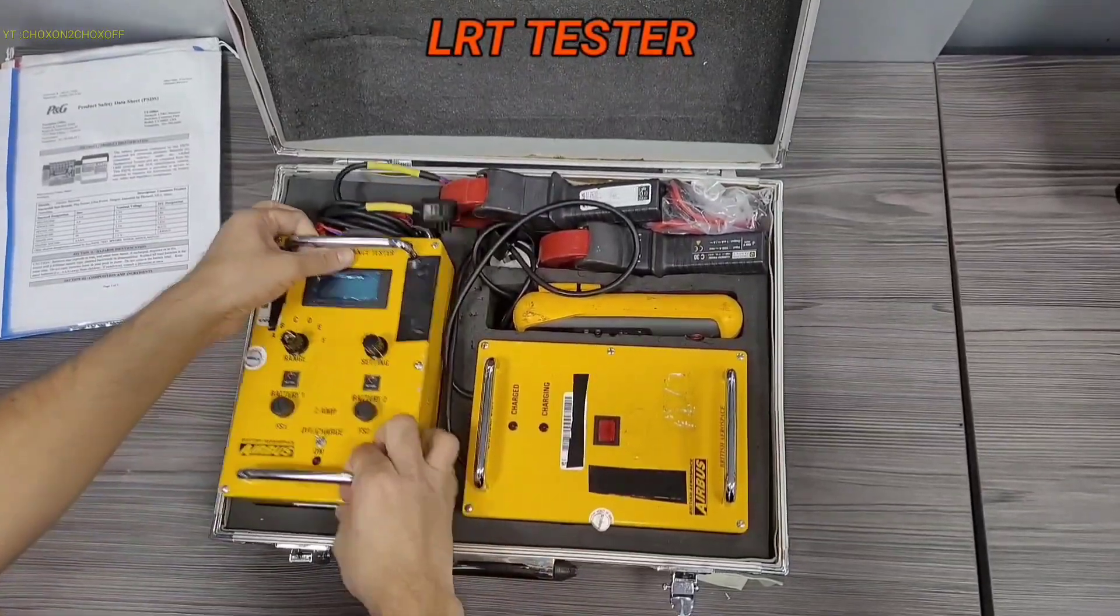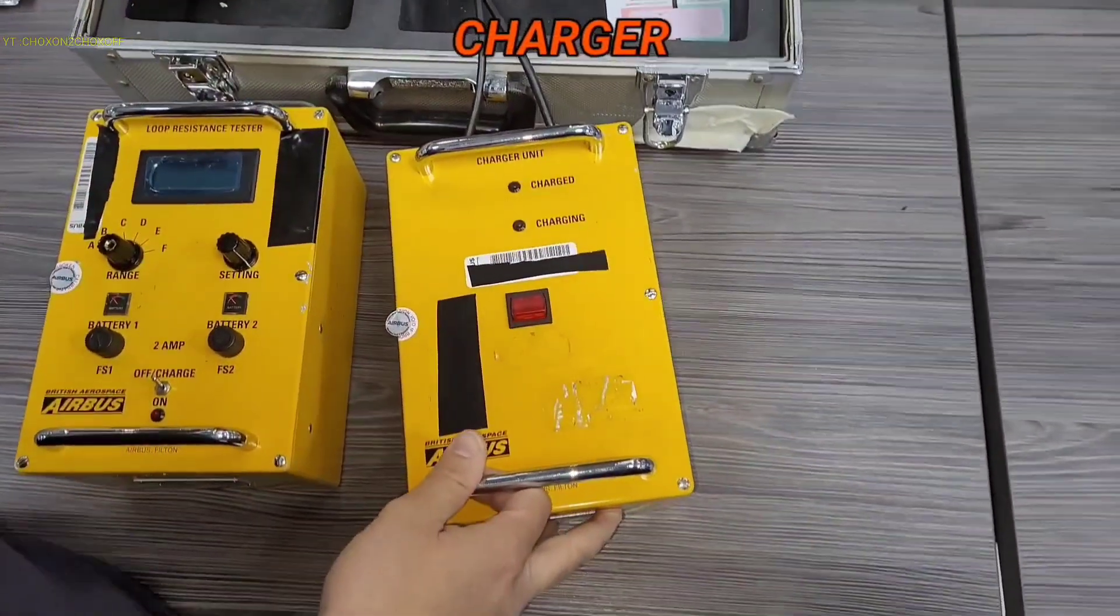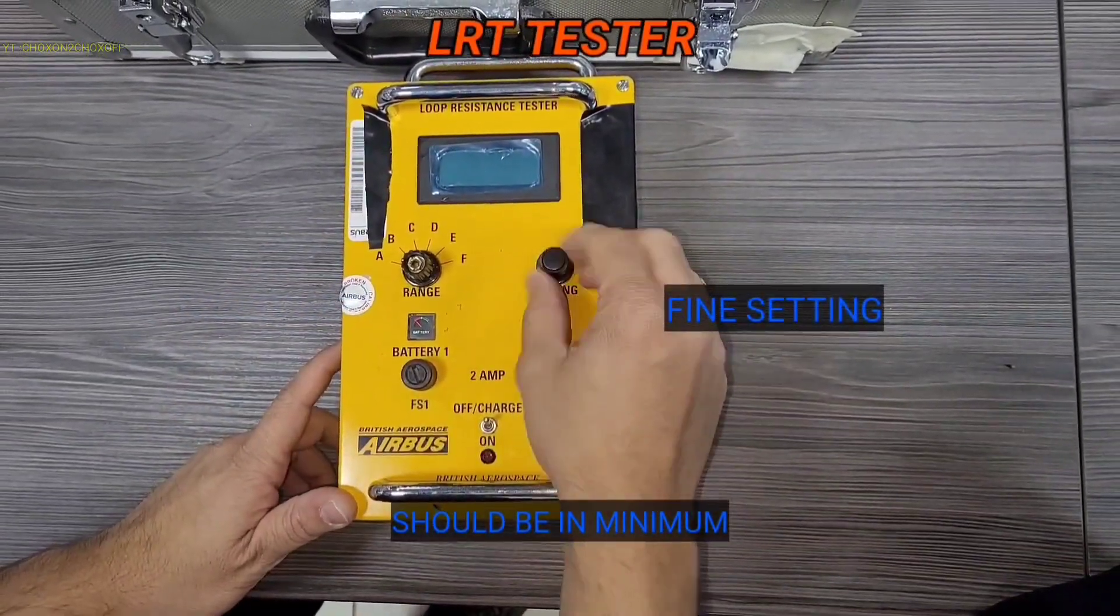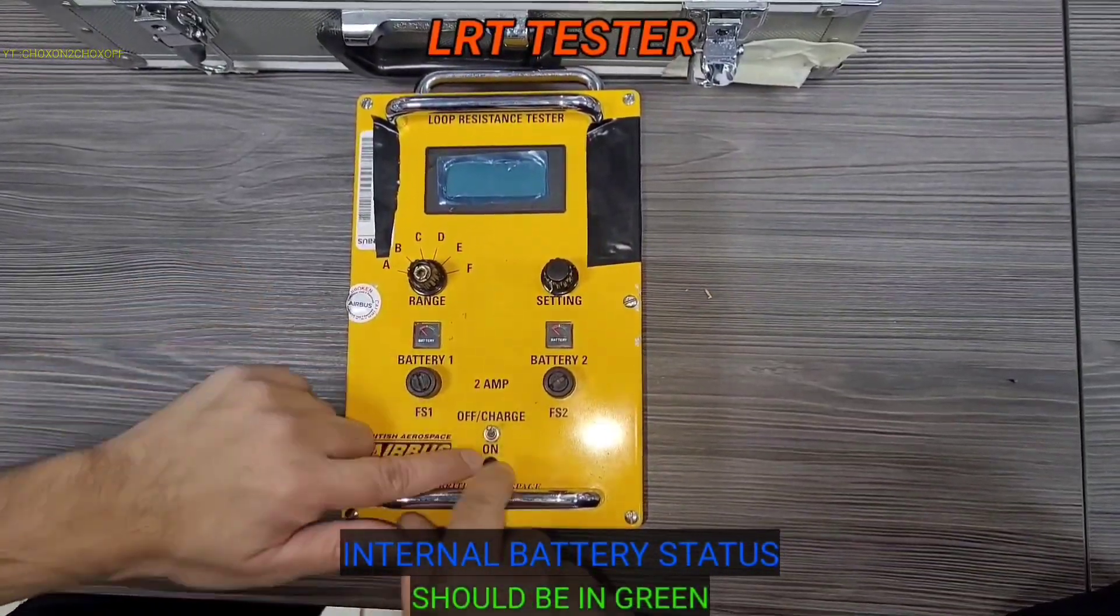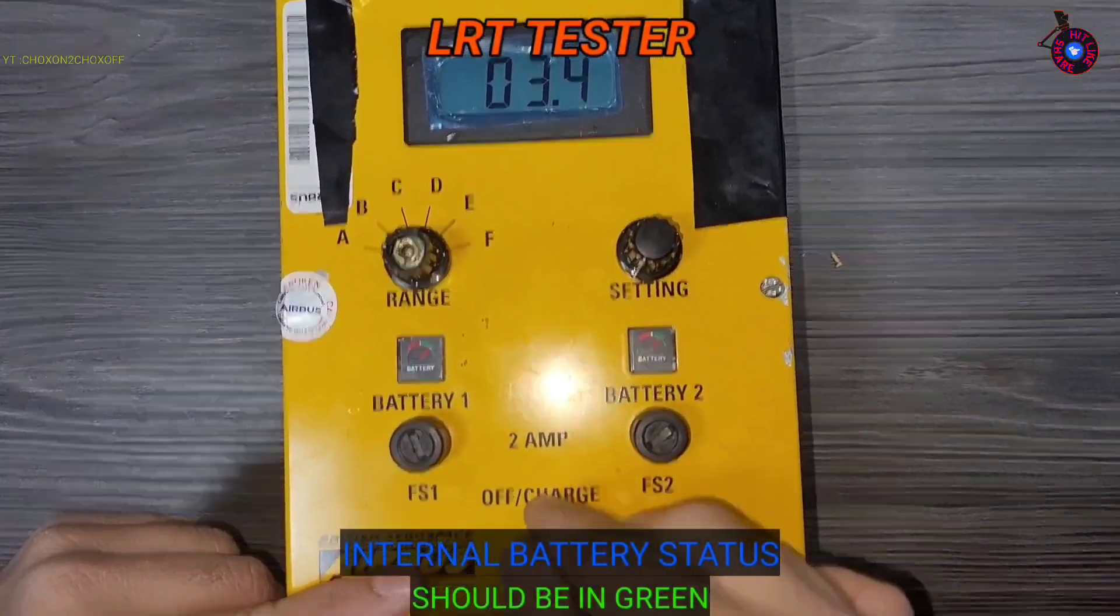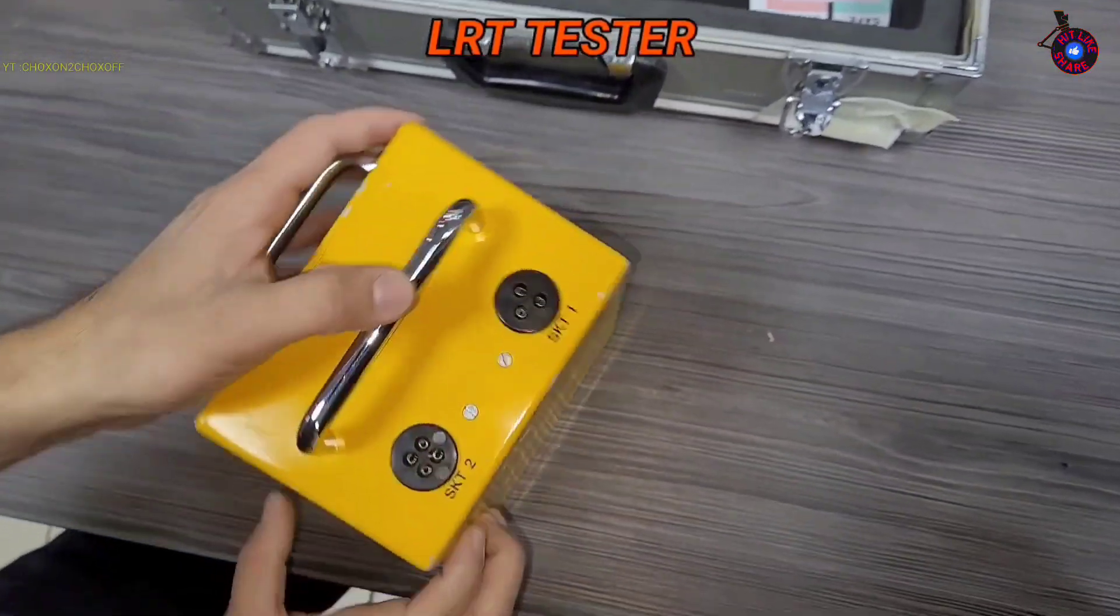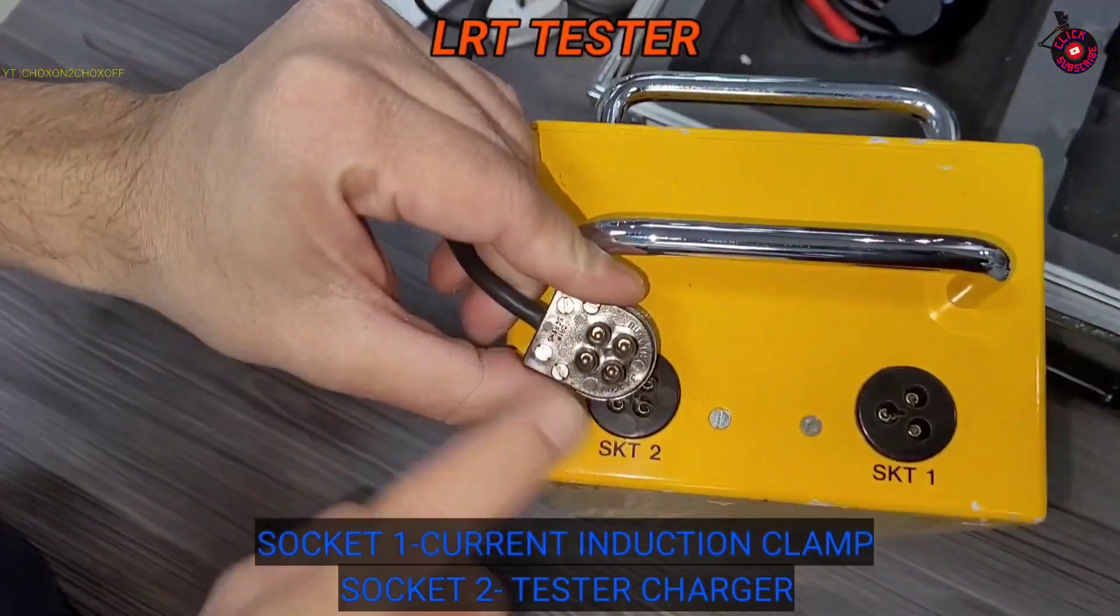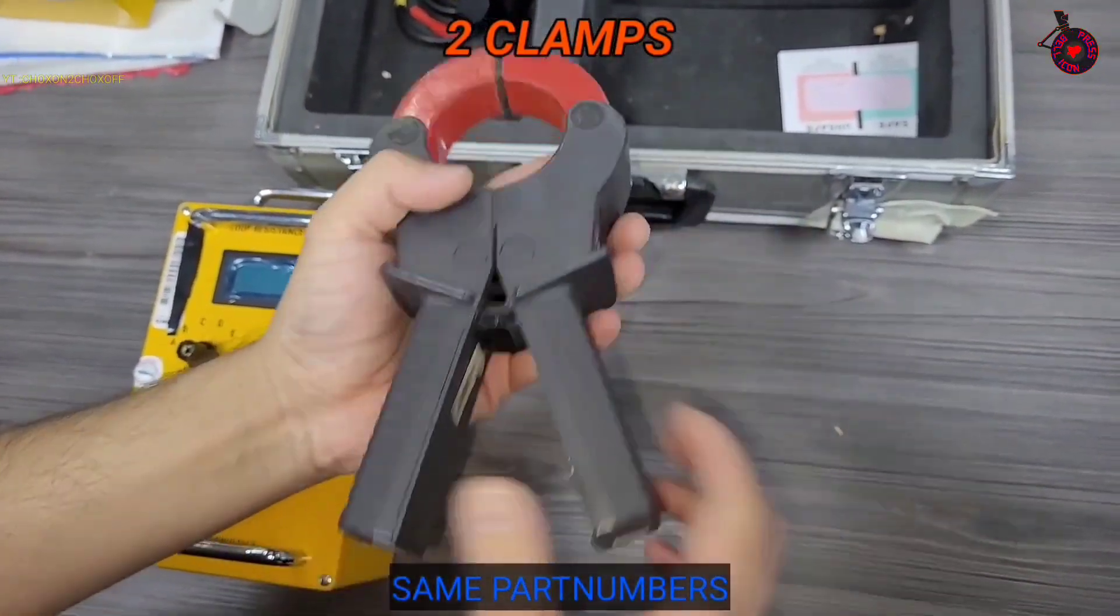So this is our tester, this is the loop resistance tester. This is one range. This is battery one, battery two. You can use either one in the arm. Socket two, socket one. Socket two is for charging.